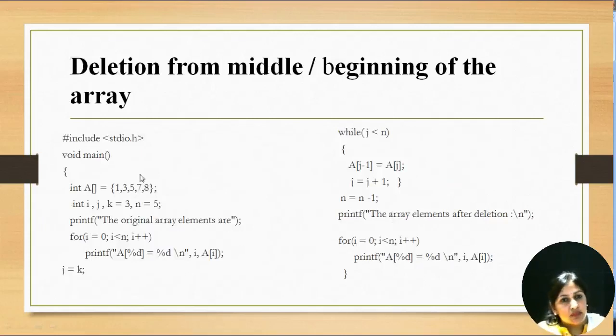This program shows the same that we have an original array 1, 3, 5, 7, 8. And we want to delete the value at third index. That is we want to delete 7. This is zeroth index, first index, second index and third index. At third index we have a value 7. We want to delete this value.